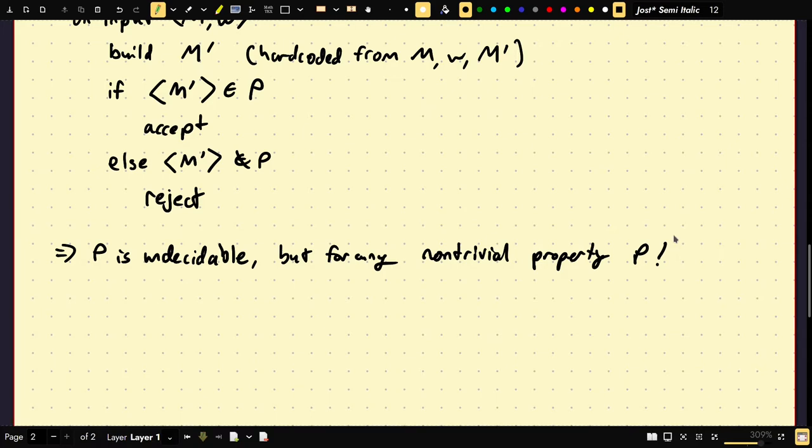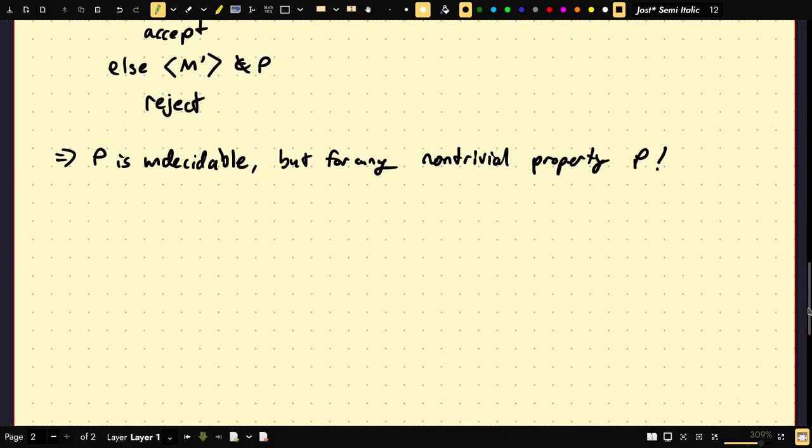Okay, that's it. That's the proof of Rice's theorem. It's a very beautiful theorem. Let's do a couple examples. They're actually very easy. Consider the set of Turing machine encodings such that the machine is regular. Not the machine. The language of the machine is regular.